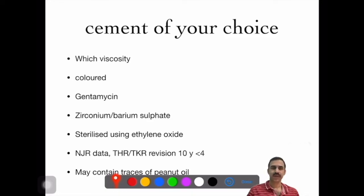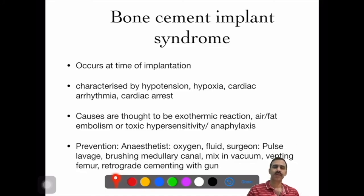What is bone cement implantation syndrome? It occurs at time of implantation, characterized by hypotension, hypoxia, cardiac arrhythmia, and cardiac arrest. Causes are thought to be exothermic reaction, fat embolism, toxic hypersensitivity, or anaphylaxis reaction. The cause is not well delineated—it's multifactorial.